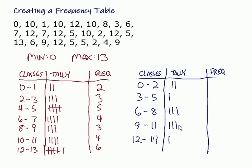1, 7, 12, 7, and we've got 12. Then we've got 5, 10, 2, 12, 5, and then we're in the bottom row. So, 13, 6 goes there, 9 goes there, 12, 5, 5, 2, 4, and 9.